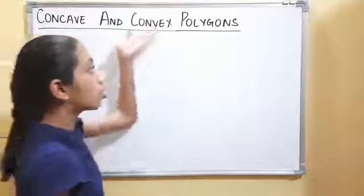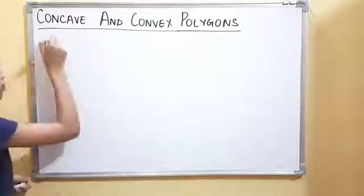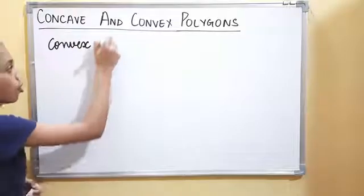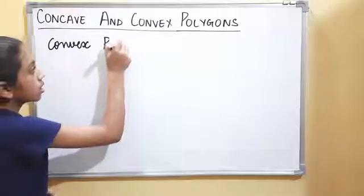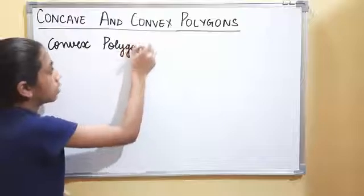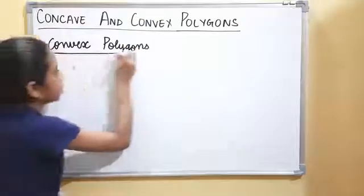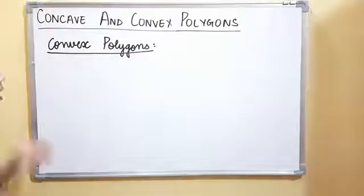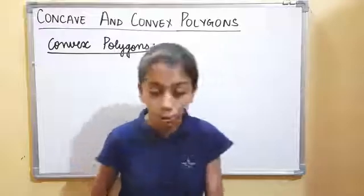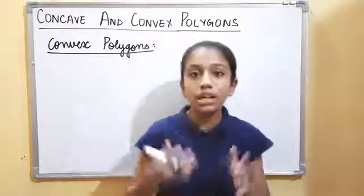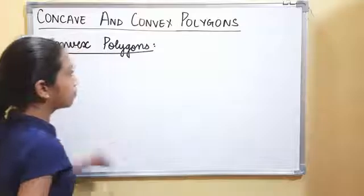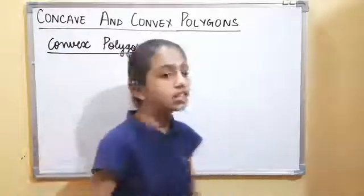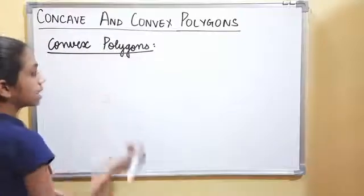Now let's talk about convex polygons. Convex polygons are polygons in which we can draw diagonals only in the interior of the shape — meaning inside the shape.